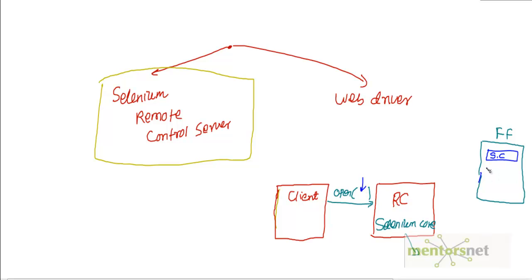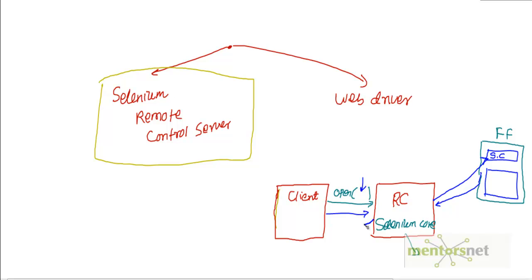Once Selenium Core JavaScript libraries are available inside the Firefox browser, the client sends further commands such as 'click and wait'. The application under test — orbitz.com — has already been loaded in the browser from the earlier open URL command. The RC server receives the 'click and wait' request, passes it to Selenium Core to execute on the browser, and whatever response comes back is sent back through the RC server to the client.